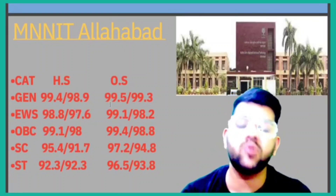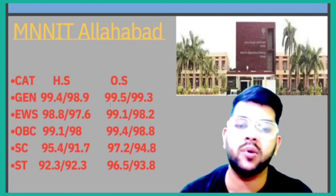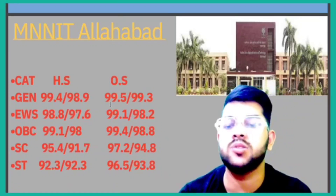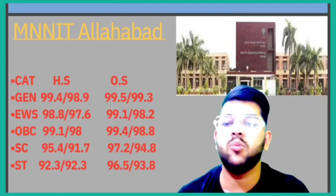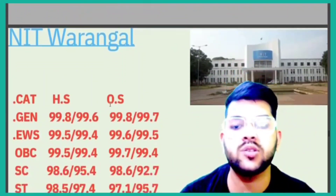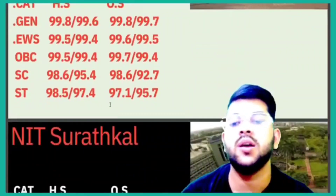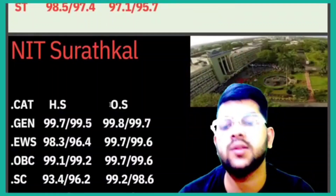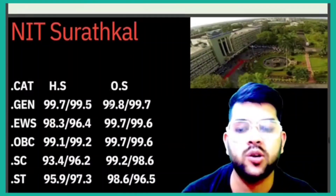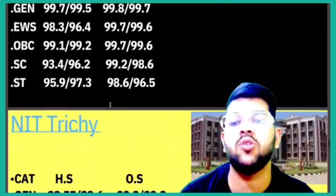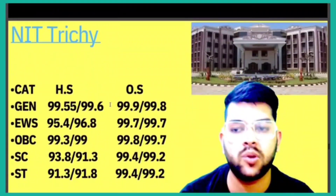For MNIT Allahabad: General 99.5, EWS 99.1, OBC 99.4, SC 97.2, ST 96.5 — that is for other state male category. If you are female, check after the slash; if you are from home state, both male and female cutoffs are available. For NIT Surat: 99.8, 99.7, 99.7, 99.2, 98.6 percentile.